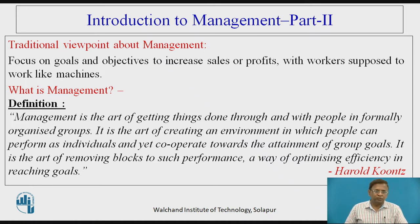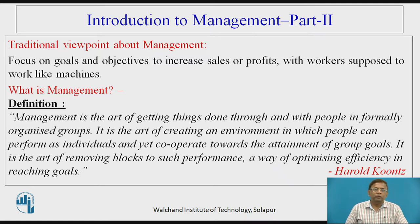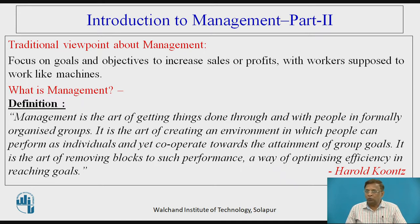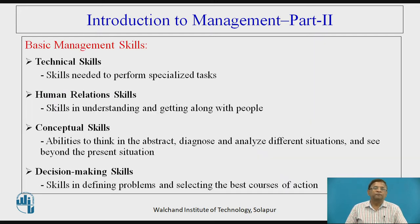Traditional management has certain limitations wherein the focus of the management was to achieve maximum profits to satisfy stakeholders and investors, and by doing so, they were looking at workers as machines. We also discussed the definition of Koons, wherein he focuses on management as an art of getting things done, where people must work individually, in groups, in formal groups, and at the global level, ultimately optimizing the consumption of resources for effective and efficient results.